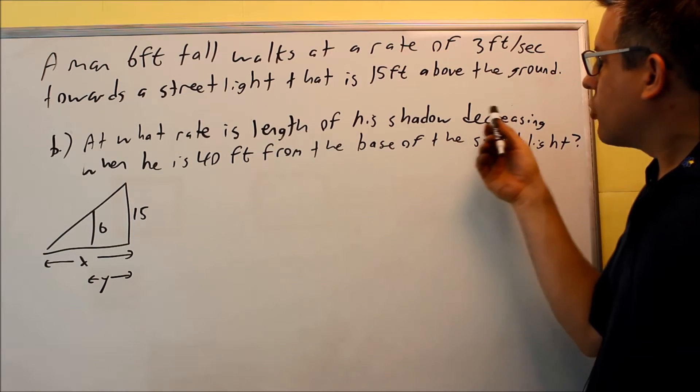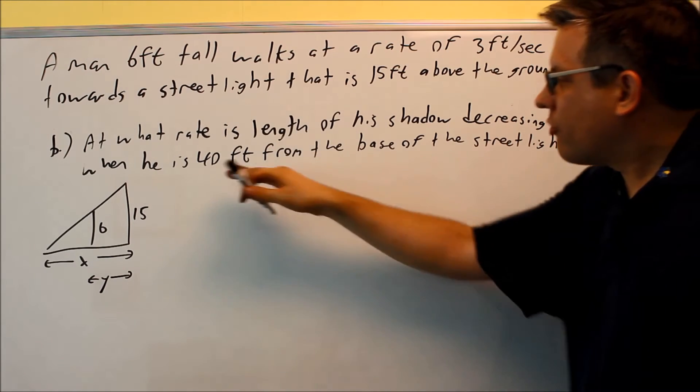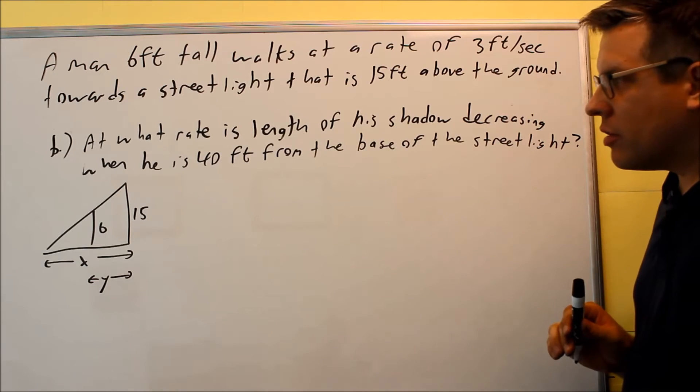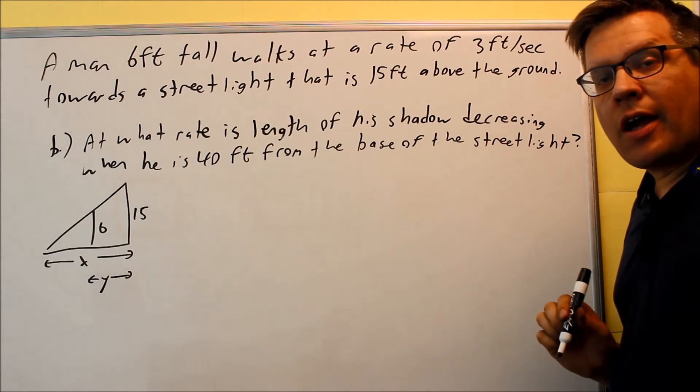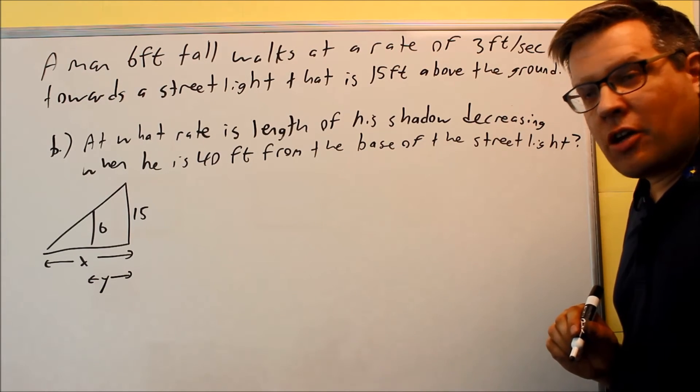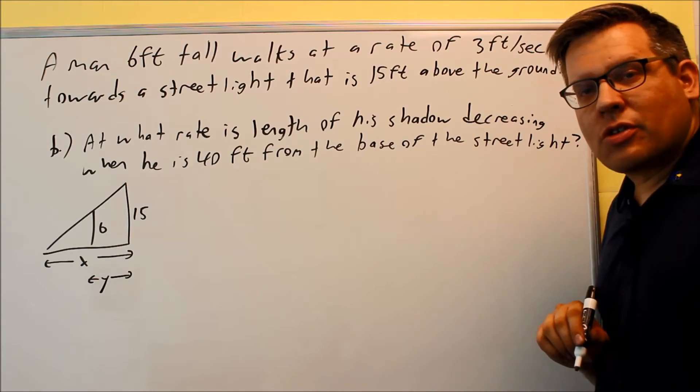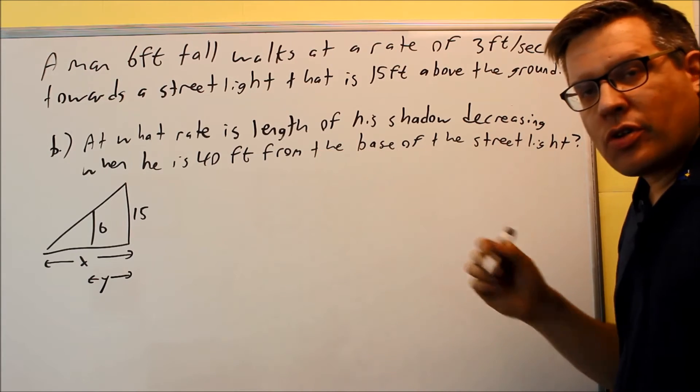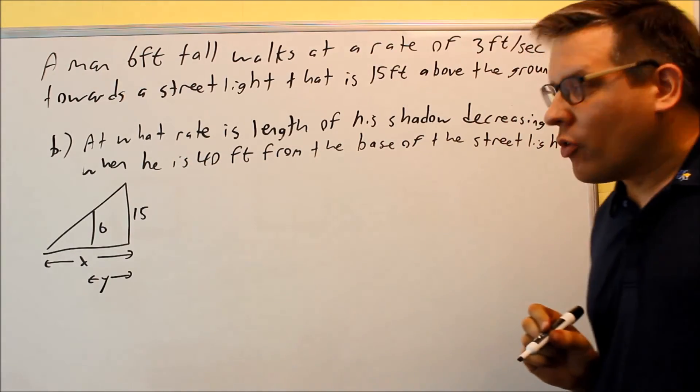At what rate is the length of the shadow decreasing when he is 40 feet from the base of the street light? So we want to look at the length of the man's shadow. Now when we did this in part A and we set this up with similar triangles, this is our drawing that we had before.